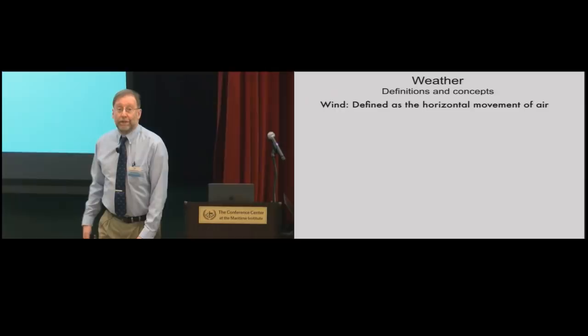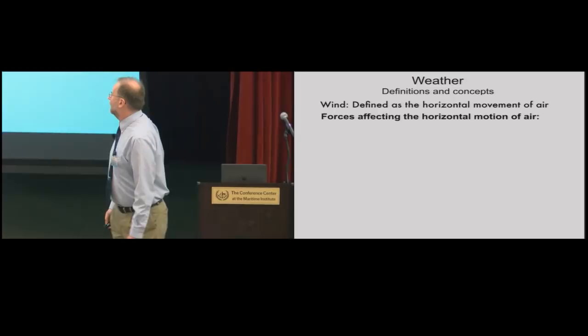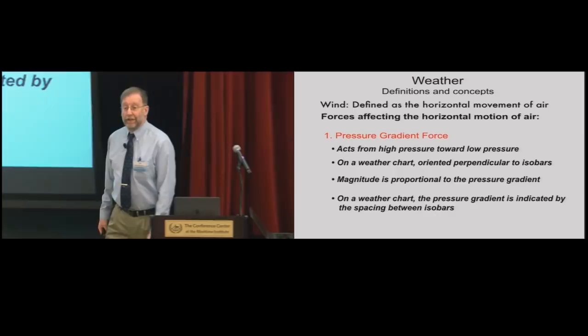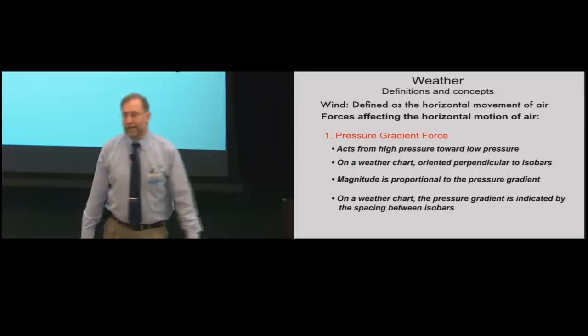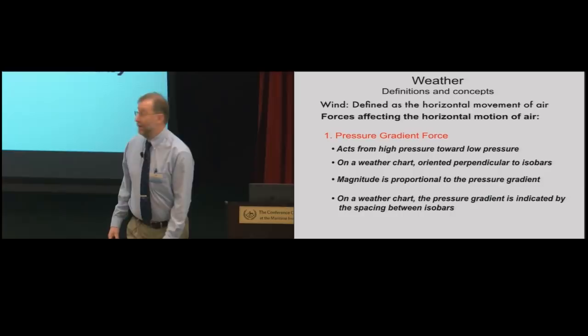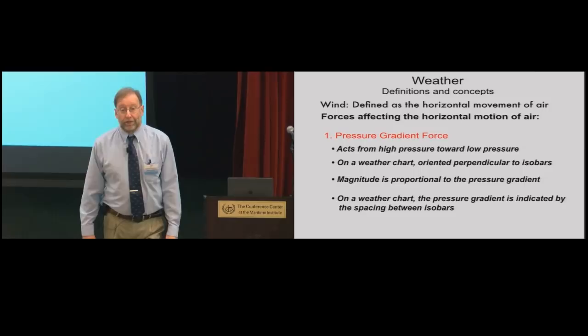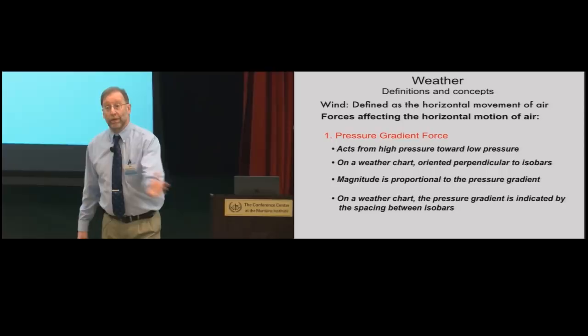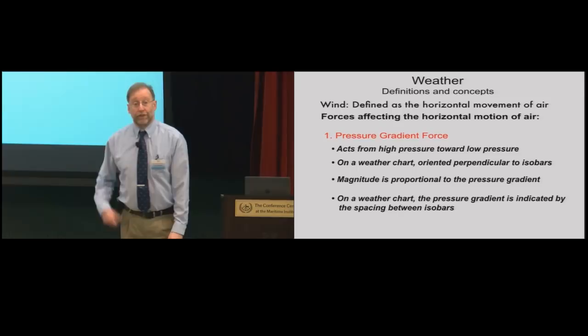Now we'll talk about wind — as sailors, this is what you're really concerned about. Wind is defined as the horizontal movement of air. The first force affecting it is the pressure gradient force. If the weight of the column of air is higher here than over there, there's a force from higher pressure toward lower pressure. On a weather chart, it's oriented perpendicular to the isobars, and its magnitude is proportional to the pressure gradient — shown by the spacing between isobars. Closer isobars indicate a stronger pressure gradient and stronger winds.